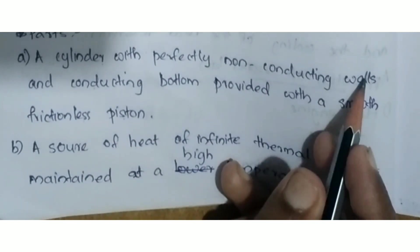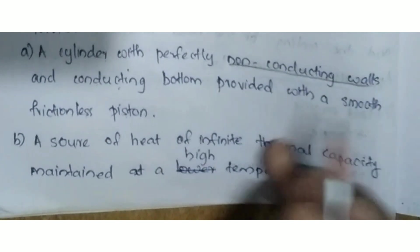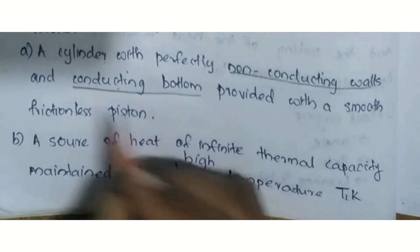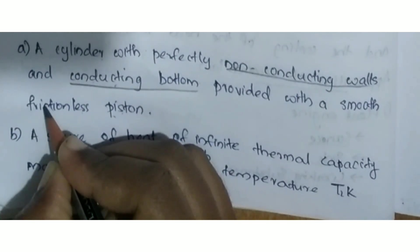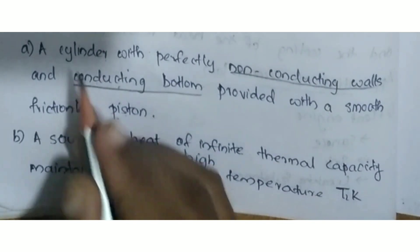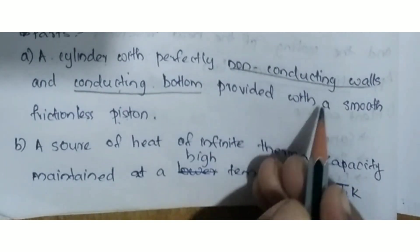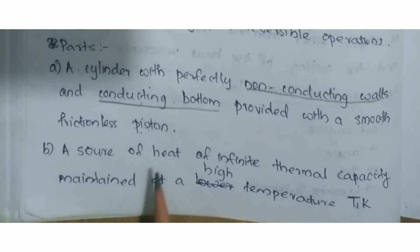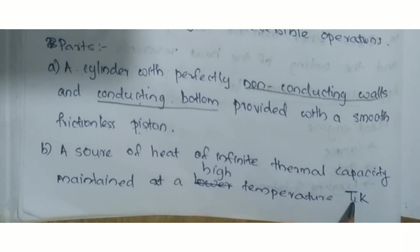The cylinder has non-conducting walls and a conducting bottom with a smooth frictionless piston. The source of heat has infinite thermal capacity maintained at high temperature T1K.